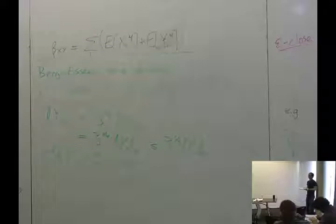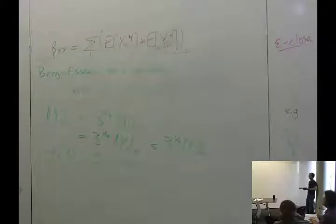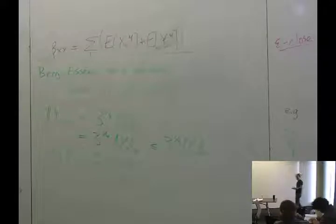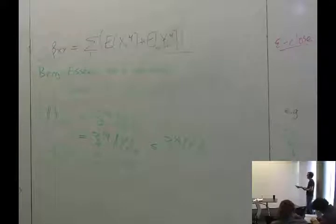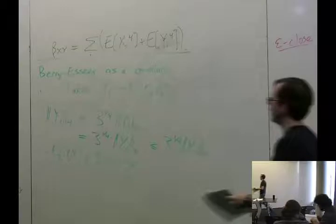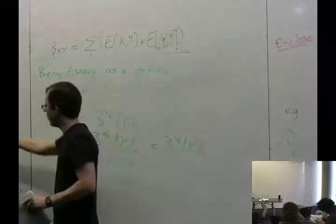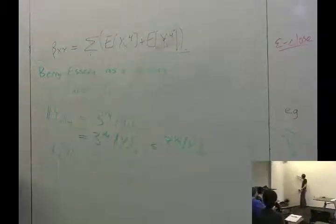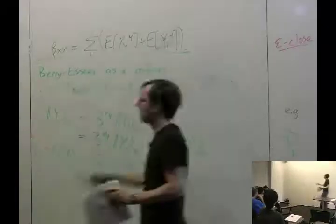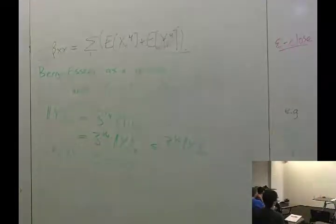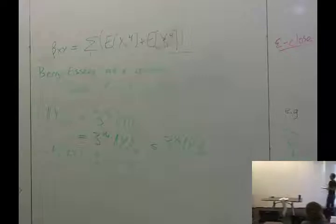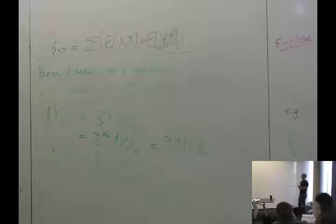Can the proof be extended to say that if the first few moments match, then the error involves the next moment? Yes, you'll see that from the proof. In fact, the proof shows you really only need matching first and second moments — stopping there gives an error involving cubic-looking things. As soon as you go past degree 2, you can do the trick of taking out a max, and if random variables are reasonable you get a small error.